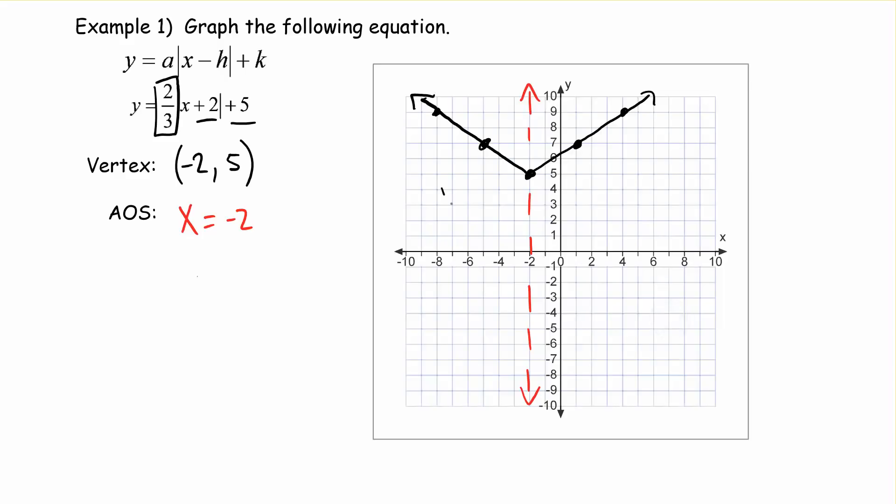We can label this. We say our vertex is negative 2, 5. And we've got an axis of symmetry. Our AOS is x equals negative 2.